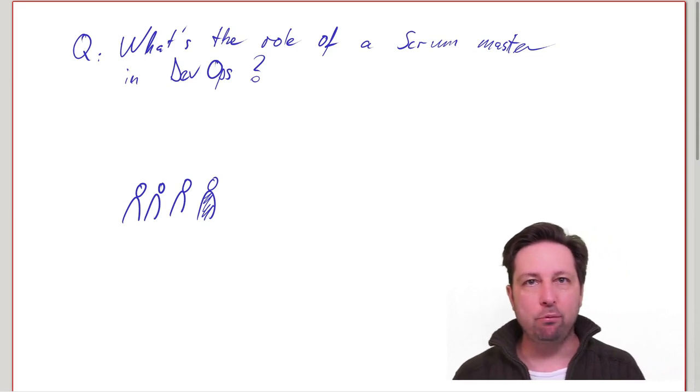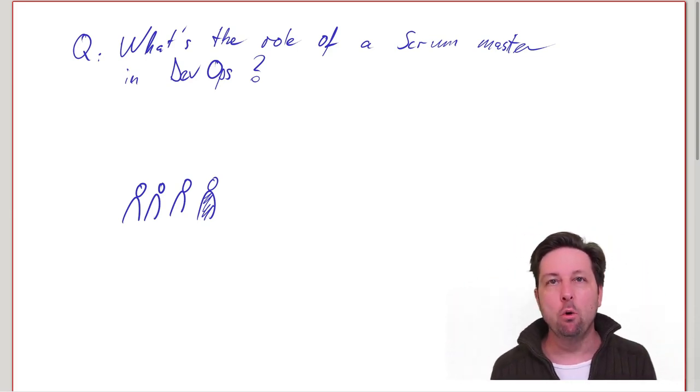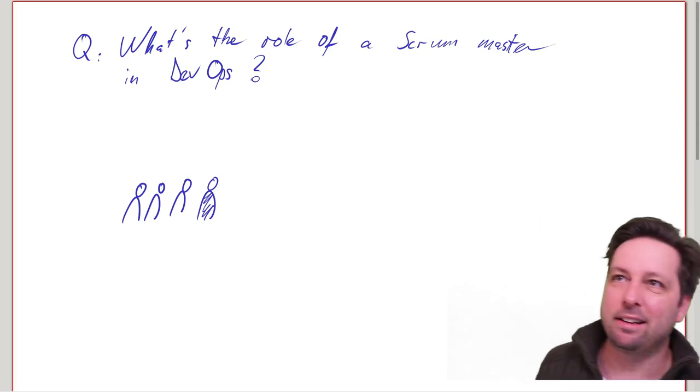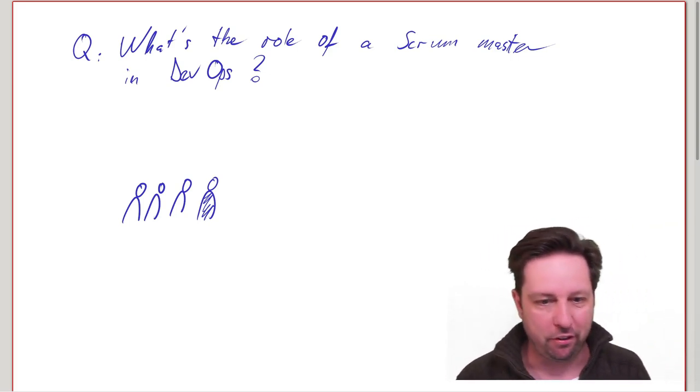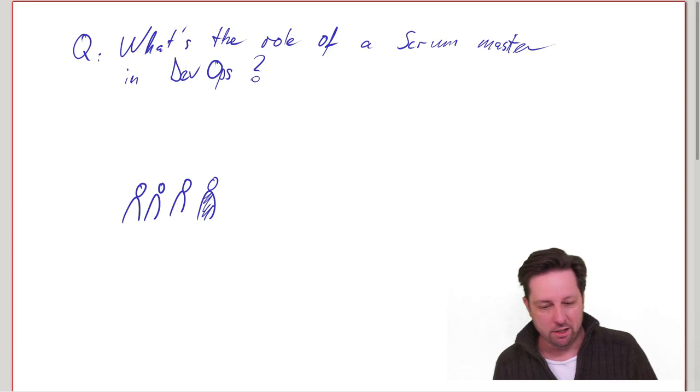Now what happens if we move from, quote unquote, only Agile to DevOps? I know it's a silly way to say it, but just for the sake of argument, let's say only Agile.